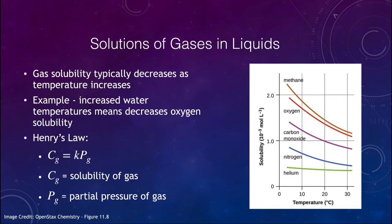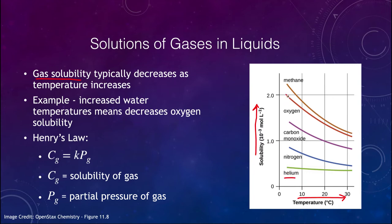Let's look at gases and solutions of gases within liquids. The solubility of a gas typically tends to decrease as the temperature increases. As temperature increases to the right on the graph, solubility goes down. For helium it doesn't change much, but for others like methane and oxygen it decreases by a factor of two just going from about 5°C to about 30°C.